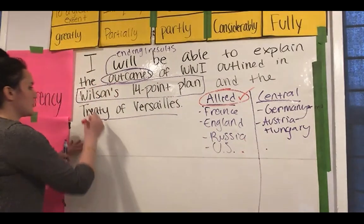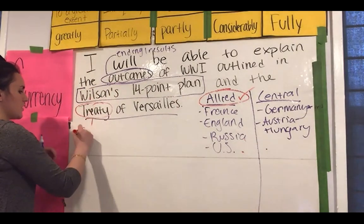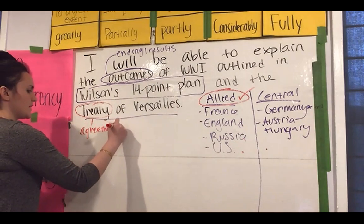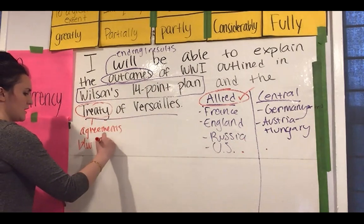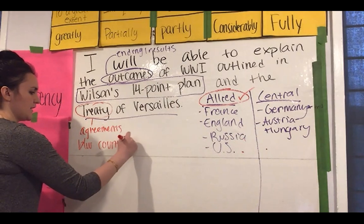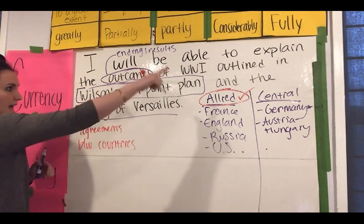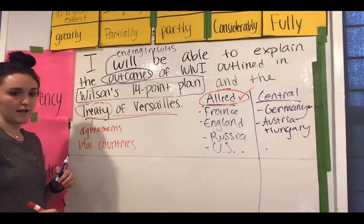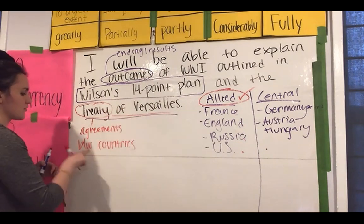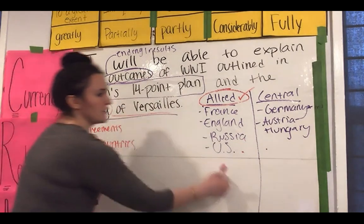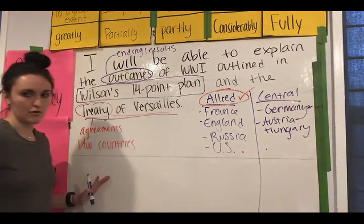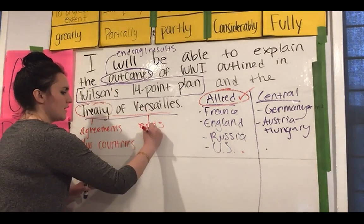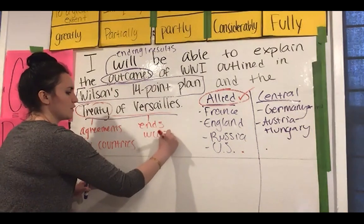Remember that agreements between countries are called treaties — agreements between countries. In today's lesson you will be studying the Treaty of Versailles. This is the agreement between the Allied and Central Powers that ends World War I.